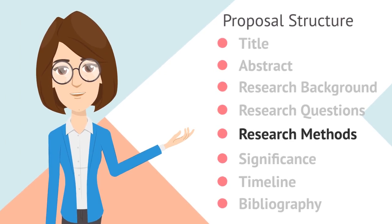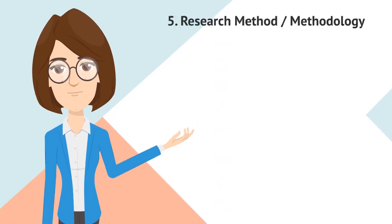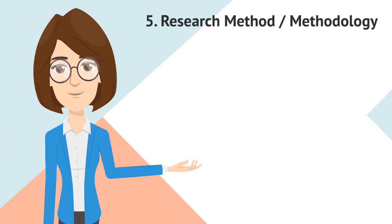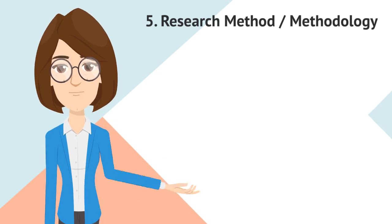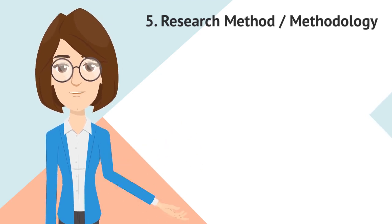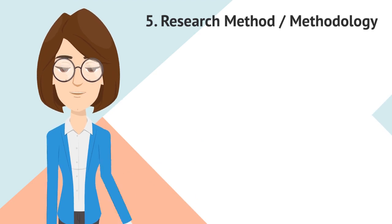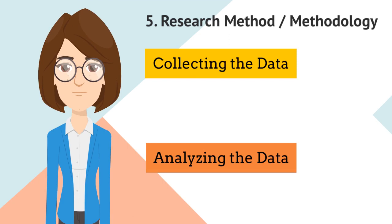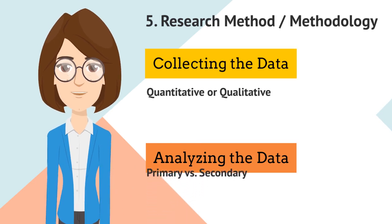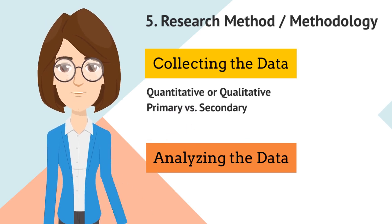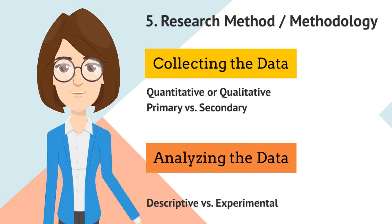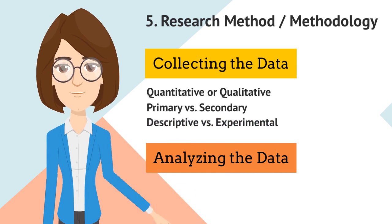Section 5 is Research Methods, or simply Methodology — it's usually the bulkiest and most significant section. You are defining your strategy: you've stated the problem, the knowledge gap, and how you intend to address it. The methodology section is majorly divided into two procedures: collecting the data and analyzing the data. For collecting data, consider: Have you chosen quantitative or qualitative and why? Primary versus secondary — will you collect original data yourself or use data already collected by someone else? Descriptive versus experimental — will you take measurements of something as it is, or perform an experiment?